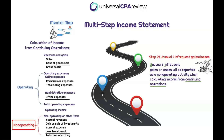Extraordinary items are simply going to get lumped into the non-operating section of the income statement. A common exam question might ask about transactions that are infrequent in occurrence or unusual in nature. What you need to remember is that these items are still going to be presented — they're just going to be presented as a component of income from continuing operations within the non-operating section. That's always going to be correct.